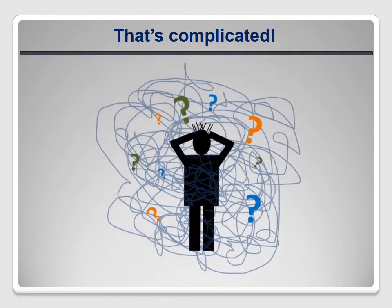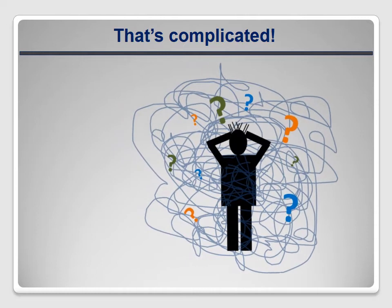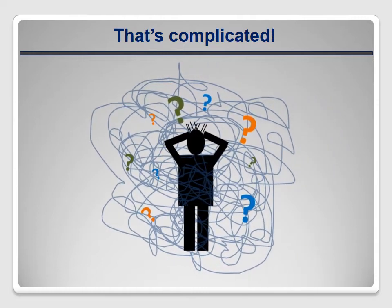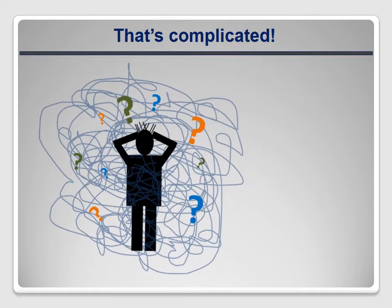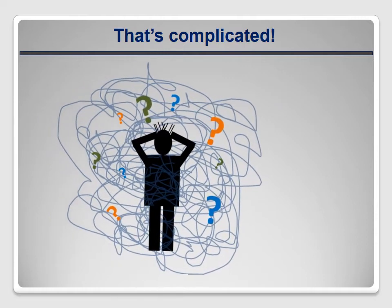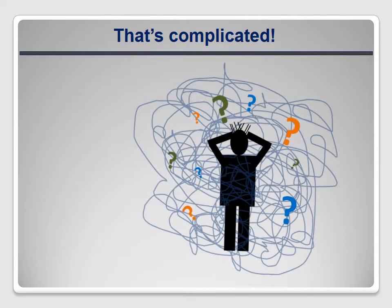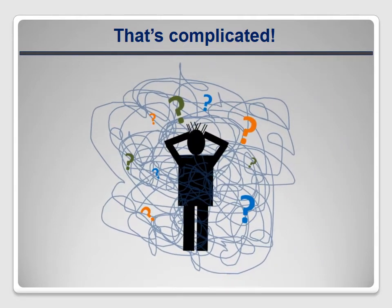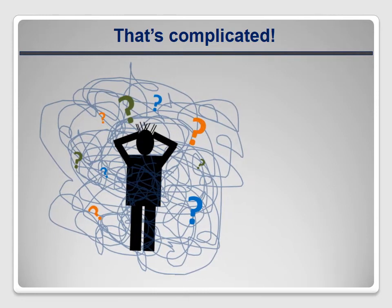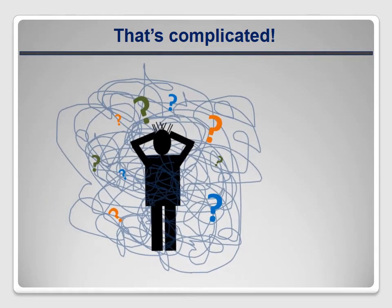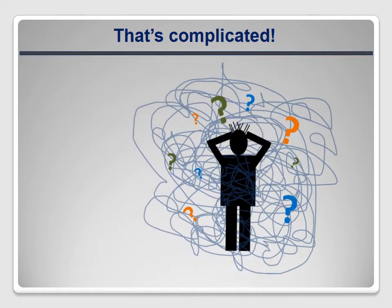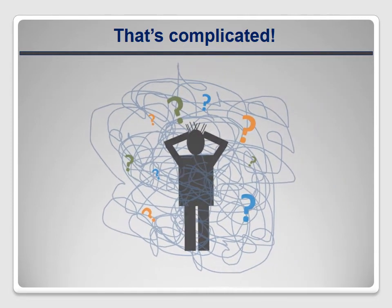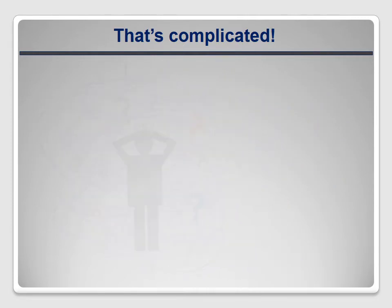That's a complicated calculation, especially when you're dealing with all the other details of an audit or retrofit job. You could make the case it's too complicated given the uncertainties — do the occupants smoke? Do they cook at home a lot? Are there pets? This isn't an exact science, though the standard seems to present it as if it were. In any case, your program may require these calculations, and there are computer-based tools that can make it easier.